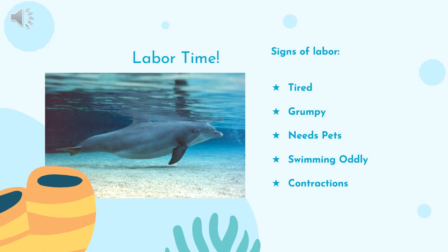Once dolphins are ready to have the baby, which is usually after about 12 months, they'll start going into labor — meaning their body is ready to have the baby. You can tell they're going into labor by observing their behavior. Labor can be very uncomfortable, so dolphins usually get grumpy and tired, staying closer to the bottom of the water. They may also want to be petted for comfort and might swim oddly, like on their sides or in strange patterns. They'll also experience contractions, which is the body contracting in an attempt to push the baby out. These can be somewhat painful, so it's easy to tell if a dolphin is going into labor just by looking at them.